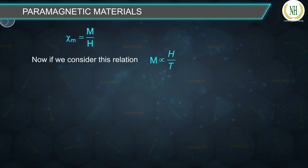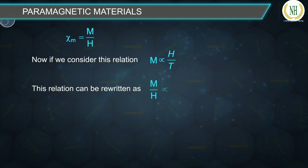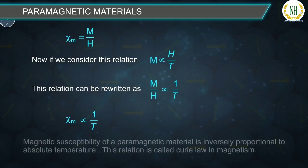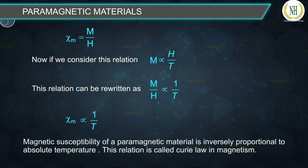From the relation M ∝ H/T, we can rewrite it as M/H ∝ 1/T. Replacing M/H with magnetic susceptibility χₘ, we get that the magnetic susceptibility of a paramagnetic material is inversely proportional to absolute temperature. This relation is called Curie's law in magnetism.